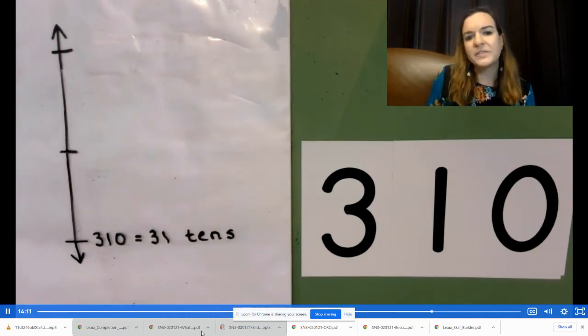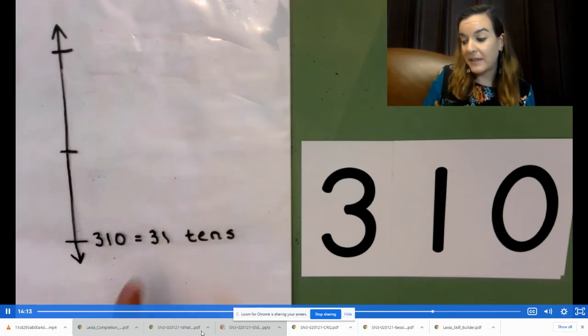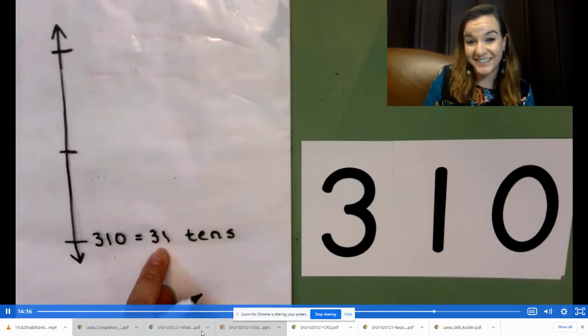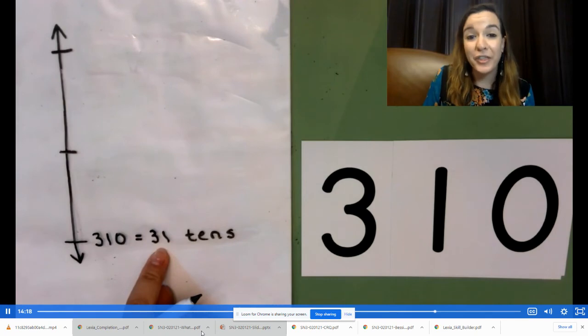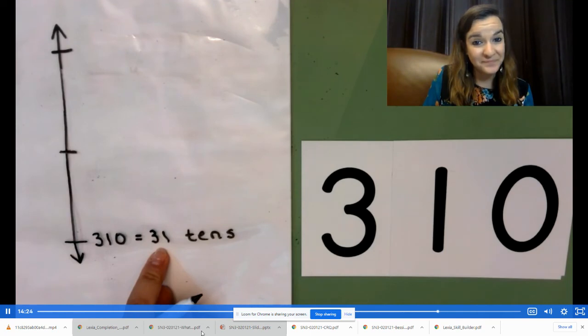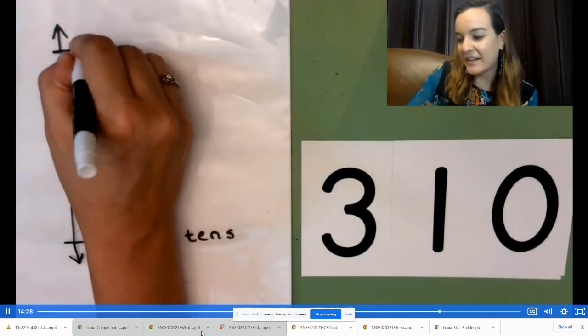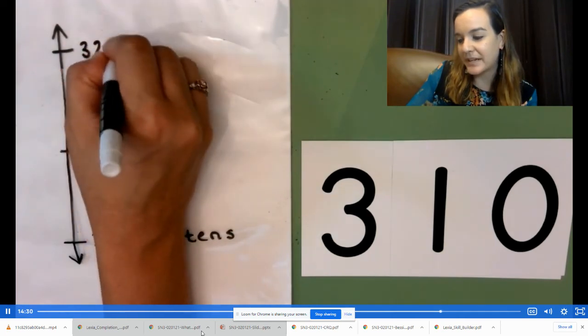What is one ten more than 31 tens? 32 tens. And what is that number in standard form? 320. That becomes our top tick mark.